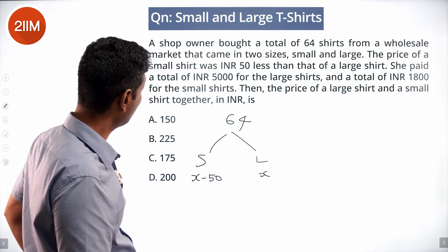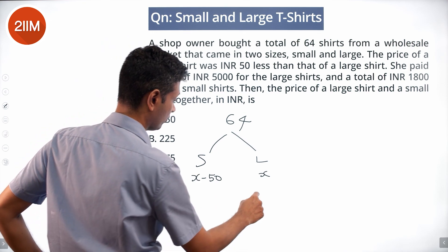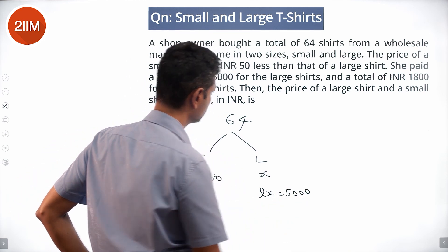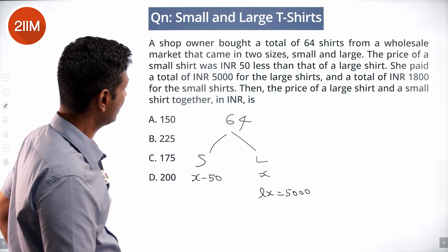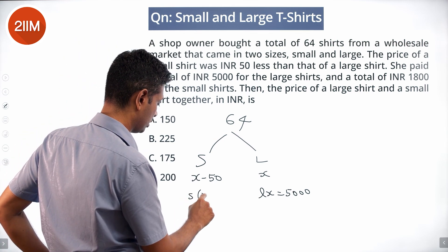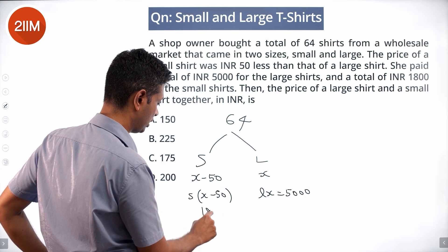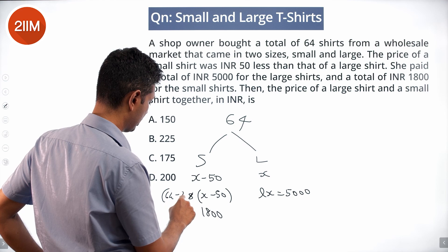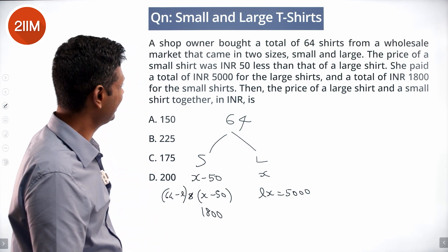She paid a total of 5000 for the large shirts, so L into X is 5000, and a total of 1800 for the small shirts, S into X minus 50 is 1800. S can be written as 64 minus L.